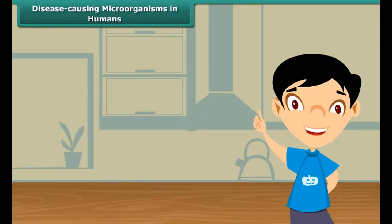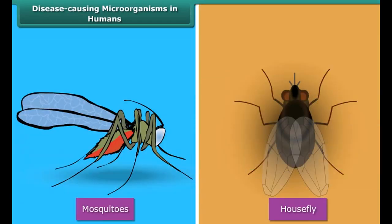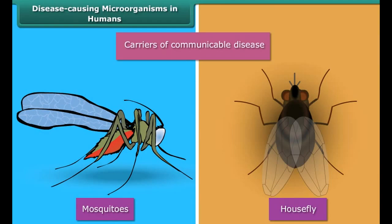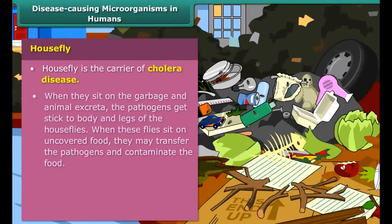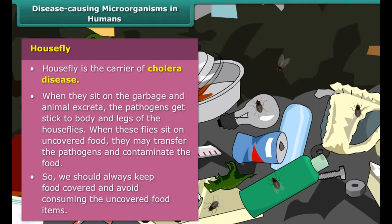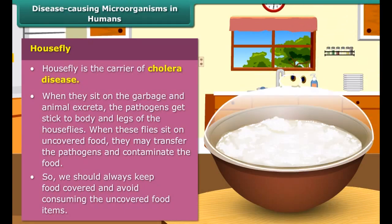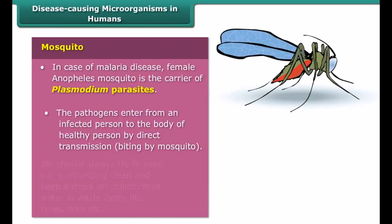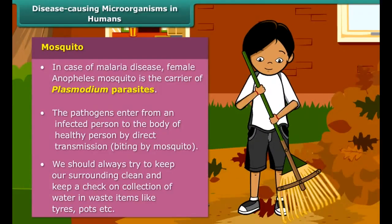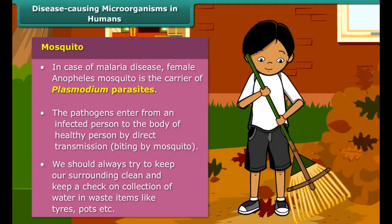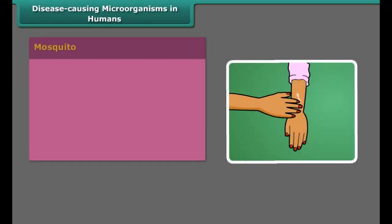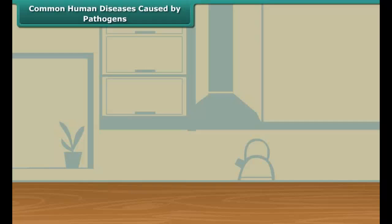Some insects and animals found in our surroundings act as carriers of pathogens. Houseflies and mosquitoes are common examples of such carriers. In cholera disease, the housefly is the carrier of many pathogens; to prevent cholera, we should always keep food covered and avoid consuming uncovered food items. In malaria disease, the female Anopheles mosquito is the carrier of Plasmodium parasites. We should use repellent creams, sprays, and mosquito nets to prevent malaria.